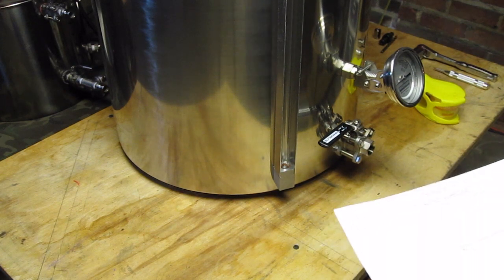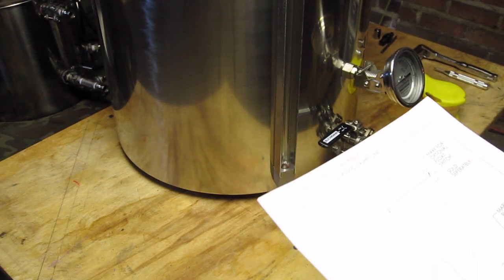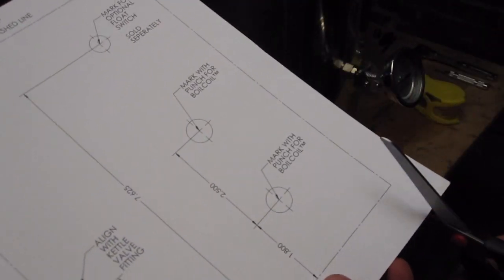Hey there, I'm going to install the boil coil now in my 20 gallon Blickman kettle. The first step is they give you this template right here and I'm going to cut it out.